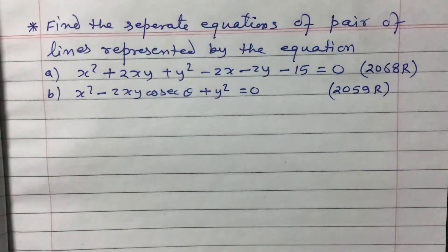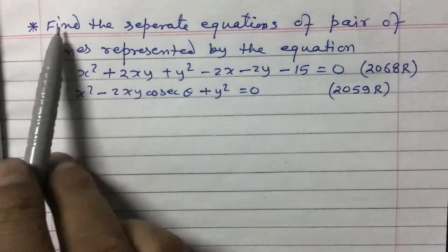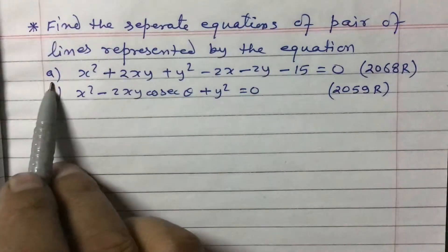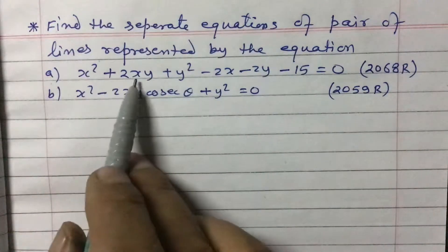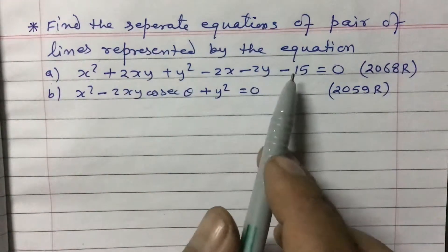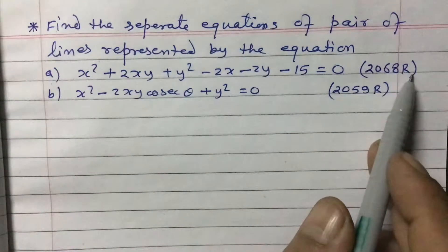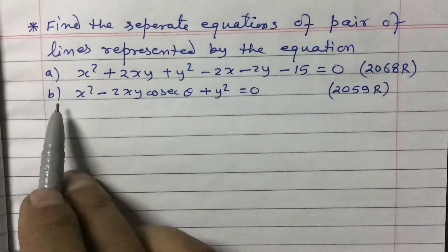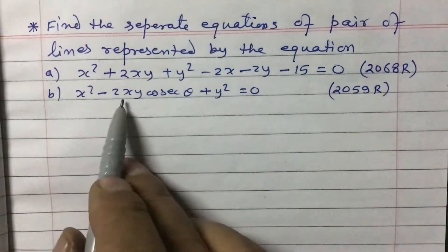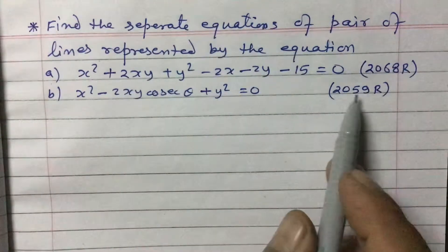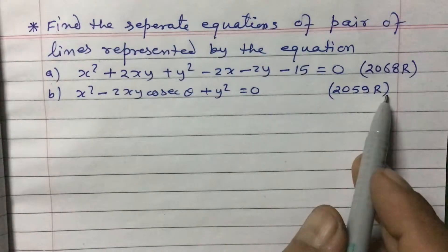Dear students, today I'm going to teach you two very important questions related to pairs of lines. The first question asks us to find the separate equations of the pair of lines represented by: x² + 2xy + y² - 2x - 2y - 15 = 0, asked in 2068 for SLC regular students. The second is x² - 2xy·cosθ + y² = 0, asked in 2059 for SLC regular students.